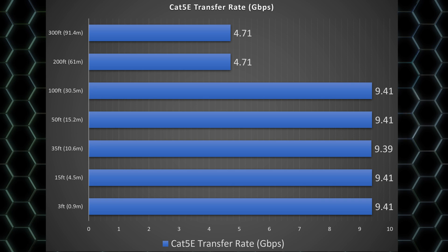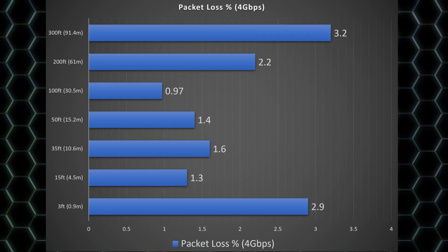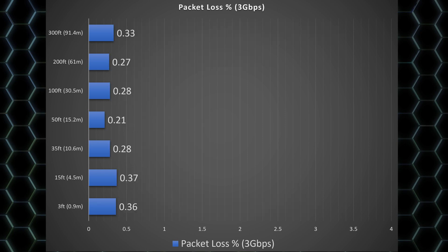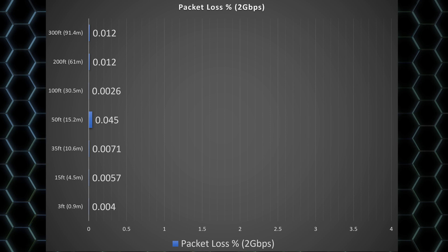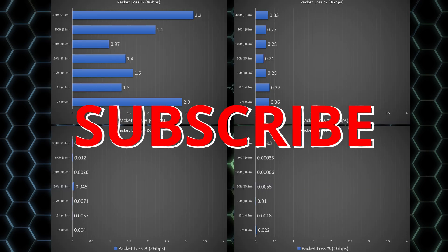To summarize: 100 feet or 30 meters and less got very similar speeds with all the cat5e cables — all very fast with similar packet loss performance. The 200-foot and 300-foot cables — 61 and 91 meters — got very similar results to each other, but couldn't quite reach full 10-gig speeds, topping out at essentially less than five gigabits. Their packet losses between themselves were also pretty similar.